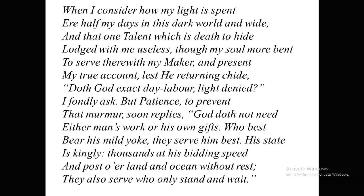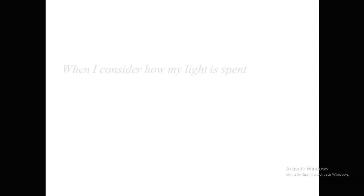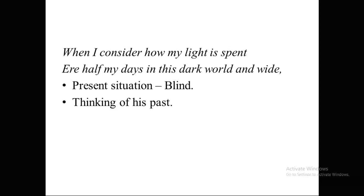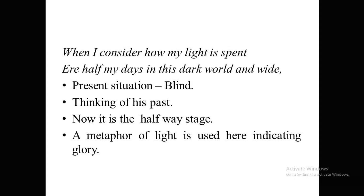Milton uses the Elizabethan sonnet pattern here. The first two lines — 'When I consider how my light is spent, / Ere half my days in this dark world and wide' — reflect Milton's present condition: he is visually impaired, completely blind, and cannot see things. Everything is dark around him. He is thinking of the days when he had not lost his eyesight, and lamenting that he must spend the rest of his life in this dark world. There is a play between light and dark — he associates light with his earlier stage and dark with his present blind condition.